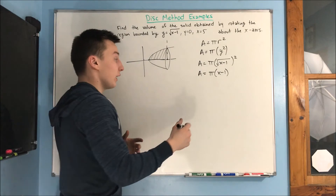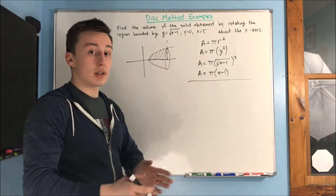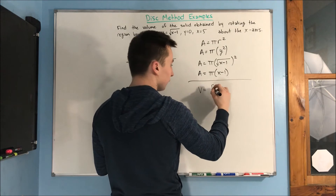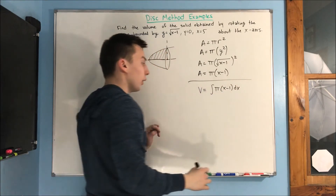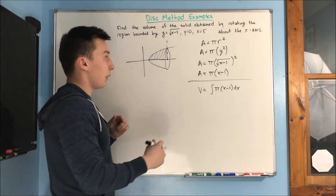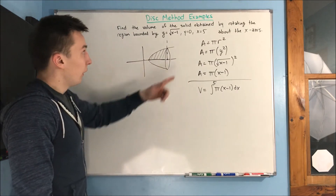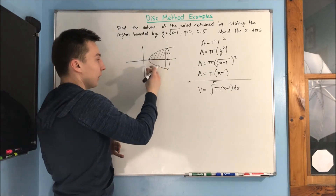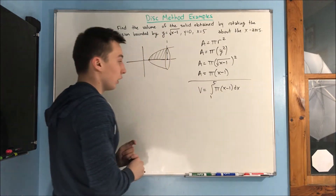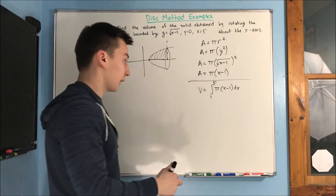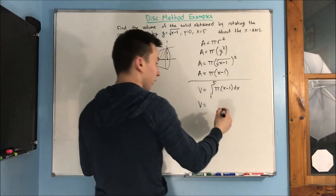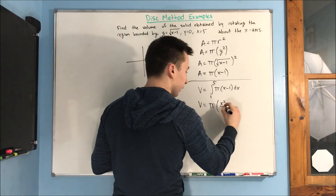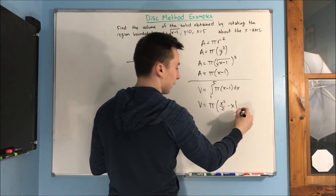Now we integrate to add up each of those cross sections. Volume equals the integral of pi times x minus 1 dx. Our upper bound is 5. Our lower bound is 1, because rad x minus 1 shifts the graph over 1, so it starts at x equals 1. We have the integral from 1 to 5 of pi times x minus 1 dx. Pulling pi out, we integrate to get x squared over 2 minus x, evaluated from 1 to 5.